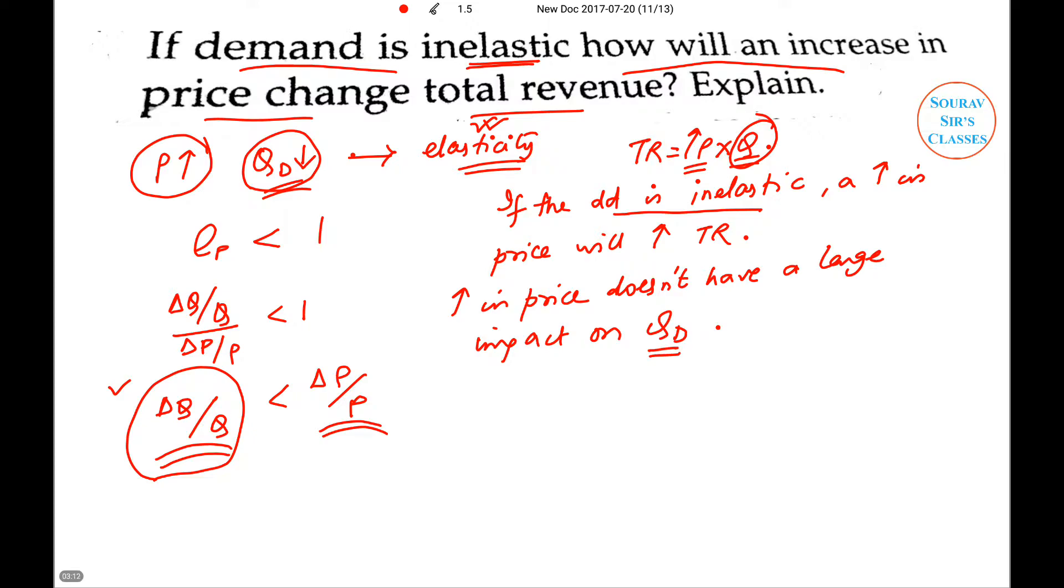than the increase in price. So if the increase in price is greater than the fall in quantity demanded, the total revenue will definitely go on increasing. This means that if we term it in terms of elasticity,